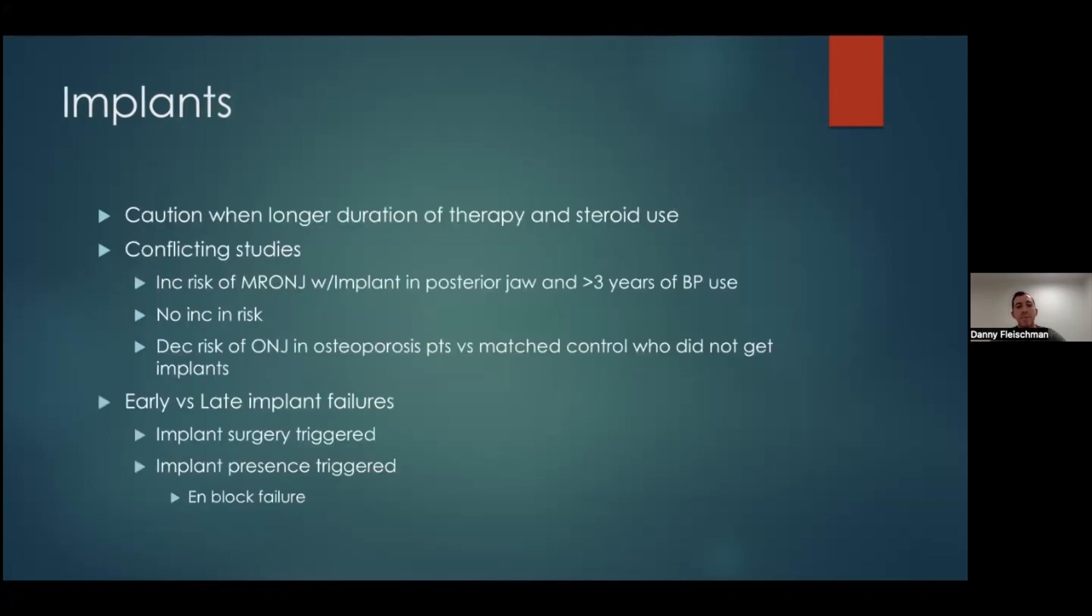One thing they talk about is implants in patients receiving anti-resorptive medications. And what they feel is that caution should be used, especially in patients who are on longer duration of therapy and with steroid use. And when they looked at studies, they found actually a lot of conflicting studies. One study they looked at, there was increased risk of osteonecrosis with implants in the posterior jaw and with those patients who had greater than three years of bisphosphonate use. Another study they looked at had no increased risk. And a third study actually showed a decreased risk in osteoporosis patients matched with controls who do not get dental implants. They don't mention, but one possible reason for this is if a patient's not getting implants, they may have a poor-fitting denture, a poor-fitting partial, or a poor-fitting flipper that could cause occlusal trauma as well. While if the implant does integrate and does well, they're less likely to have trauma after that initial integration.